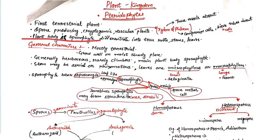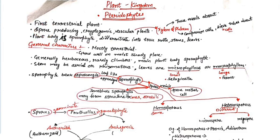The plant body is sporophytic and spores are produced. The sporophytic body is differentiated into root, stem, and leaves. Pteridophytes have true roots, true stems, and true leaves — unlike bryophytes.